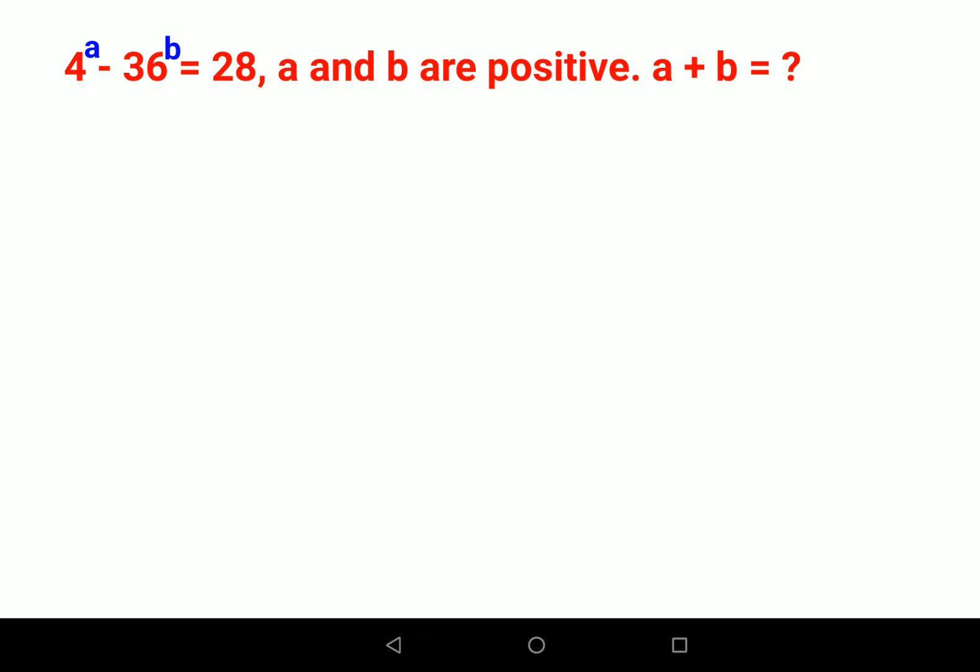Now in this scenario, we'll write 2 raised to 2 as 4 the whole raised to a, minus 6 square is also 36, so instead of 36 I'll write 6 square the whole raised to b equals to 28.